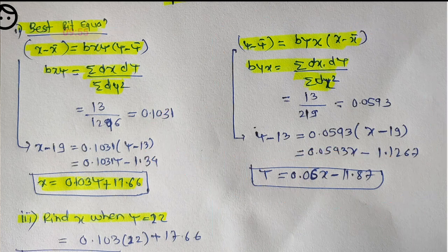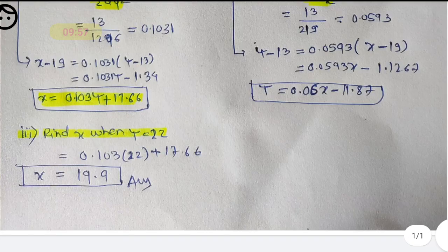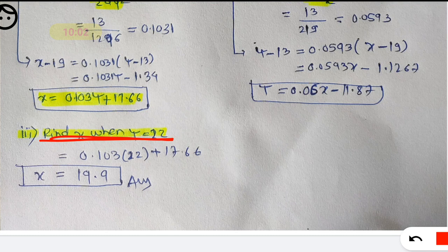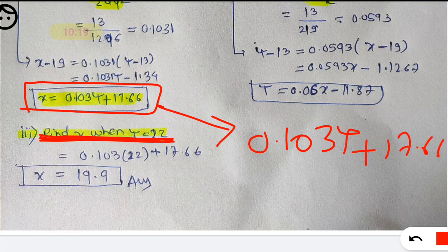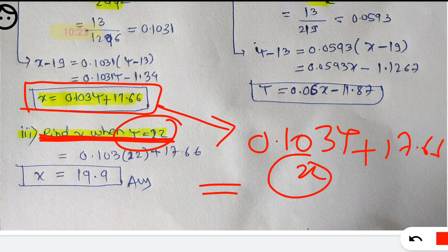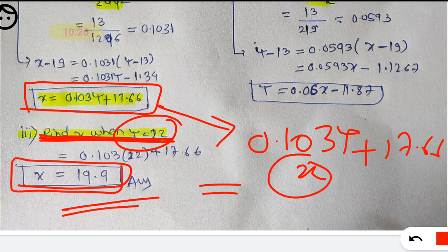Now they are asking to calculate x when y is equal to 22. Since we need to find x, we use the equation for x: x equals 0.103y plus 17.66. Simply put y equals 22, and you will get x equals 19.9. This is your answer.